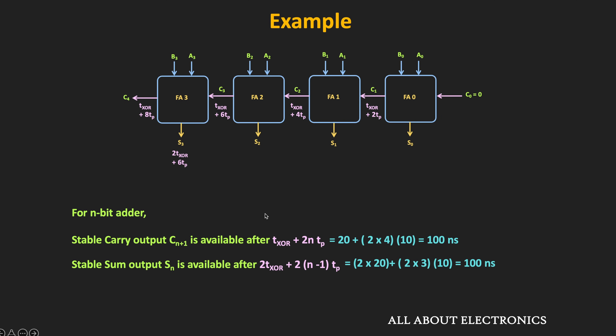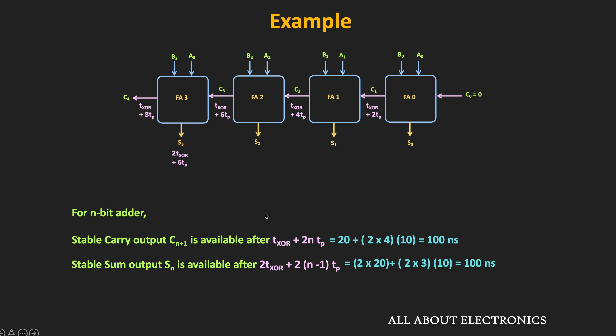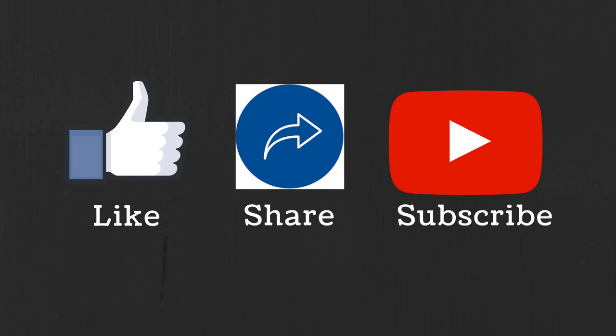In this way we can find the worst-case carry propagation delay of the ripple carry adder. Since the carry propagates from one stage to the next, the valid sum and carry output is available only after the total carry propagation delay. This issue can be resolved using the look-ahead carry adder, which we will cover in the next video. If you have any questions or suggestions, let me know in the comments below, and if you liked this video, hit the like button and subscribe.